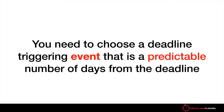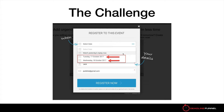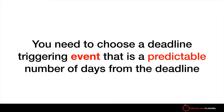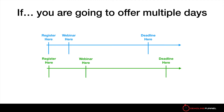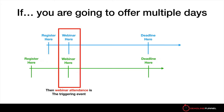You need to choose a deadline triggering event that is a predictable number of days from the deadline. See how the one hash mark lined up in both the blue and the green timeline is the registration event — and this is causing a problem because there's not a predictable number of days between when they register and when the deadline is. It all comes back to the fact that someone can register on any given date for later today or sometime tomorrow. So we need an event that is a predictable number of days from the deadline. If you're going to offer multiple days, you want to line it up so that the webinar attendance is the triggering event.